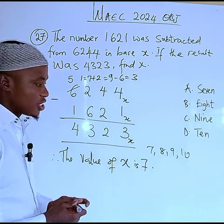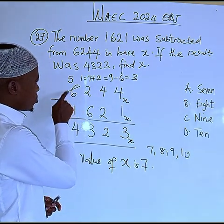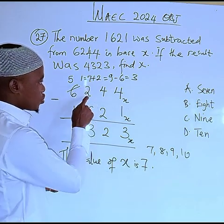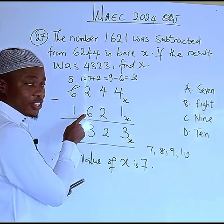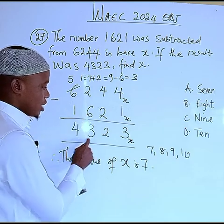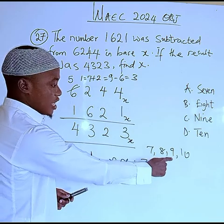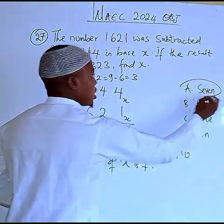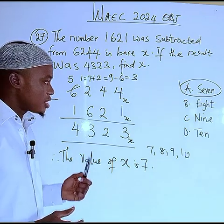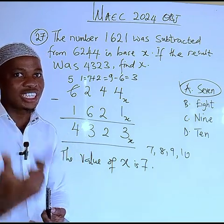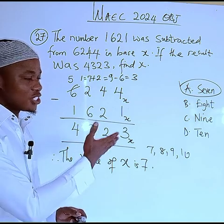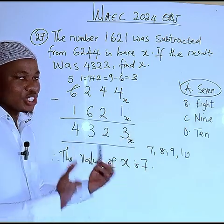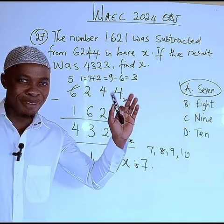Let's verify: if we try base 8, borrowing gives us 8 plus 2 equals 10, and 10 minus 6 equals 4 — which does not match the 3 we need. The same problem occurs with base 9 and 10. Therefore, the answer is x equals 7, which is option A. Please watch this video again to fully understand. Thank you so much for watching, bye.